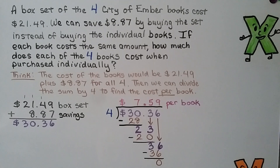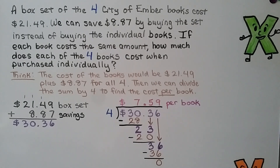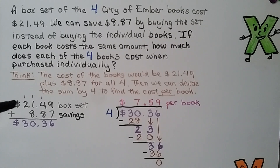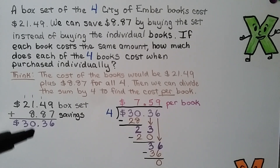A box set of the four City of Ember books costs $21.49. We can save $8.87 by buying the set instead of buying the individual books. If each book costs the same amount, how much does each of the four books cost when purchased individually? We think the cost of all four books bought separately would be $21.49 plus $8.87. Adding those together gives us $30.36, which is what we would have paid buying them separately.